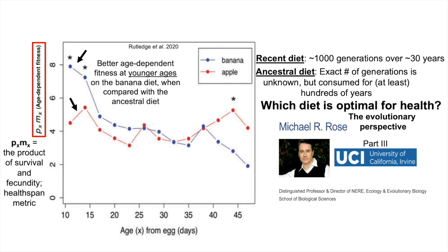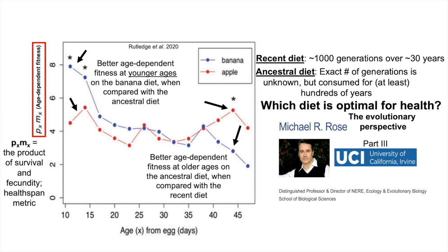What does it look like in terms of differences for healthspan on the recent diet versus the ancestral diet? We can see there is better age-dependent fitness at younger ages on the banana diet — the blue circles — when compared with the apple diet, the red circles, at younger ages, so 15 days old or younger. However, at older ages, the flies raised on the evolutionarily recent diet, banana, had a worse healthspan when compared with the ancestral diet, the apple, as shown by the stars and the black arrows.